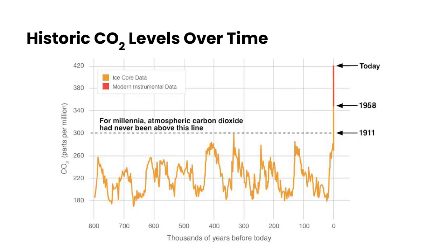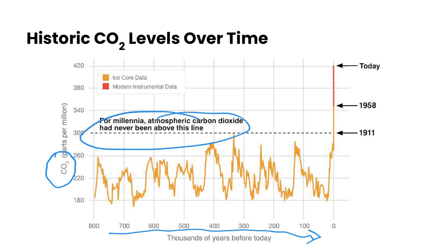This graph really shows the impact of human-made emissions, especially over the last century. Looking at the carbon dioxide present in our atmosphere over time, for millennia the atmospheric carbon dioxide has never been above this line here. It goes up and down and fluctuates because we do have seasons — carbon dioxide levels vary between winter and summer.